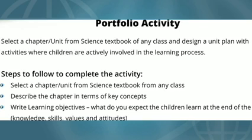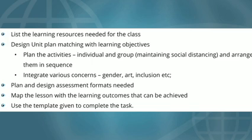Steps to follow to complete the activity: select a chapter or unit from a science textbook from any class. Describe the chapter in terms of key concepts and learning objectives — what do you expect the children to learn at the end of the lesson in terms of knowledge, skills, values, and attitudes. List the learning resources needed for the class. Design the unit plan matching with learning objectives.